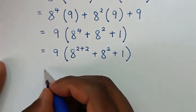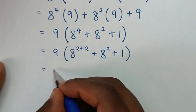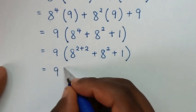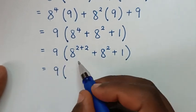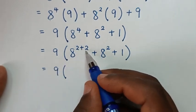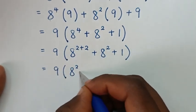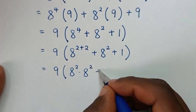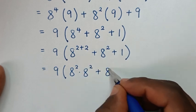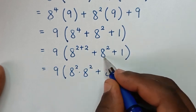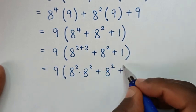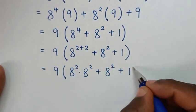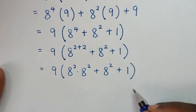Then it will be equal to 9 bracket: 8 power 2 times 8 power 2, then plus 8 power 2, which gives us 8 power 2 plus this, plus 1, bracket. Then it will be equal to 9 bracket: 8 power 2 times 8 power 2 plus 8 power 2 — 8 power 2 is common, so we'll take 8 power 2 out of bracket.